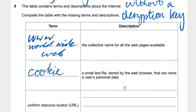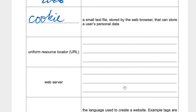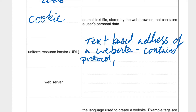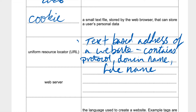Now for the descriptions: the Uniform Resource Locator, or URL. What is a URL? It is basically a text-based address of a website. It contains, usually, a protocol, domain name, and file name or folder. So that's: text-based address of a website, contains protocol, domain name, and file name.